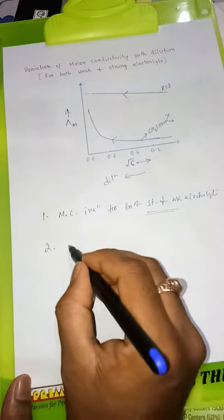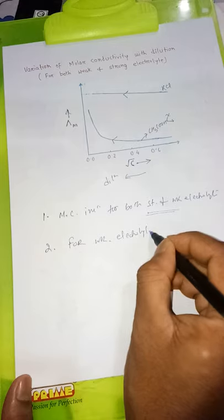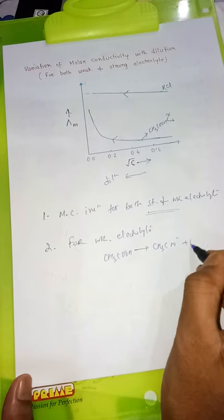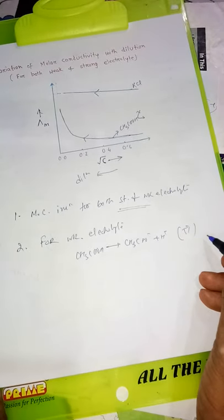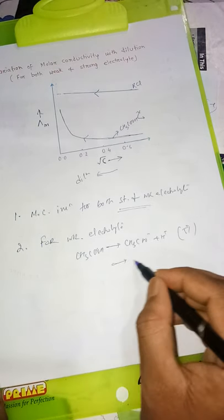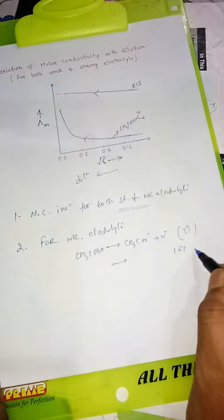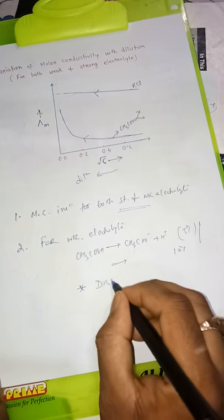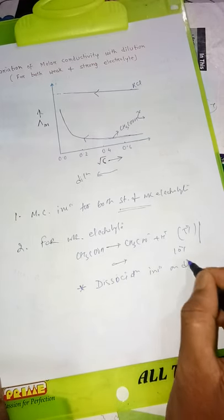The second point: for weak electrolyte CH3COOH, its dissociation — CH3COOH giving H positive — if you add 100 ml of water you get around 5% dissociation, and if you add 200 ml of water you get around 10% dissociation. So for weak electrolyte, dissociation increases on dilution. This is the conclusion: dissociation increases on dilution.